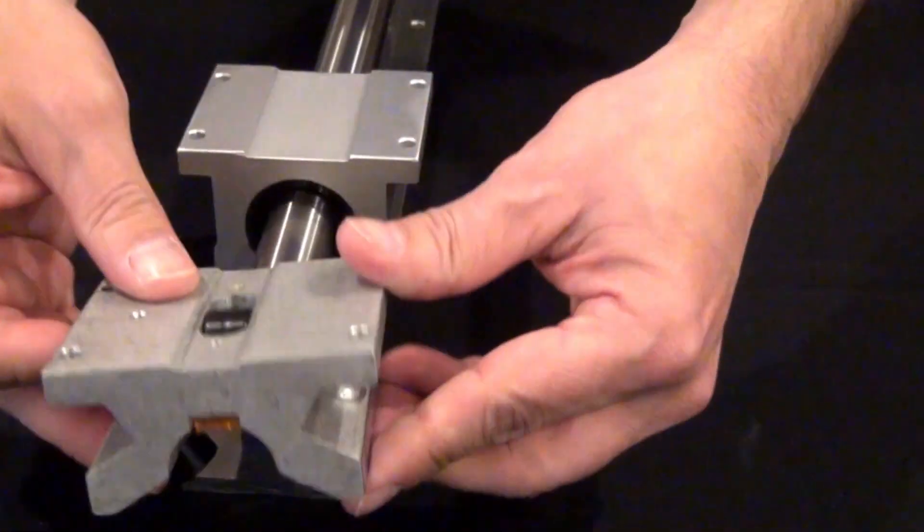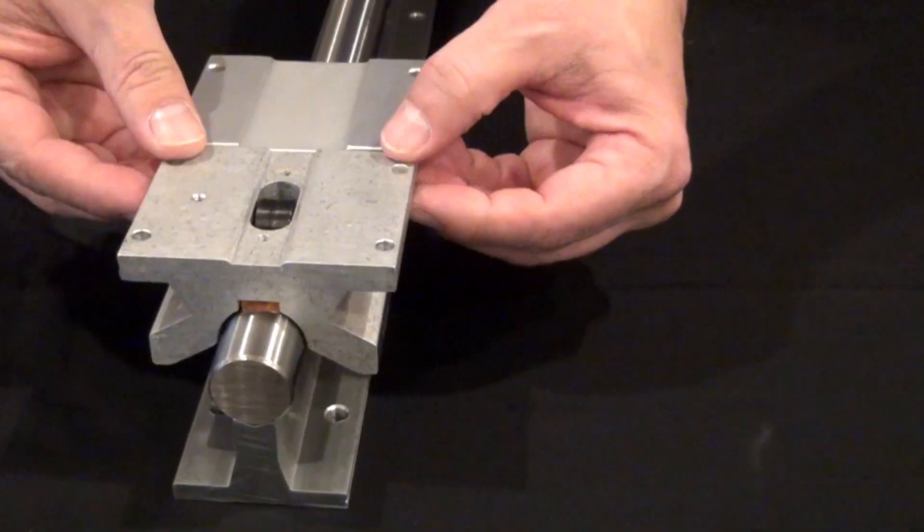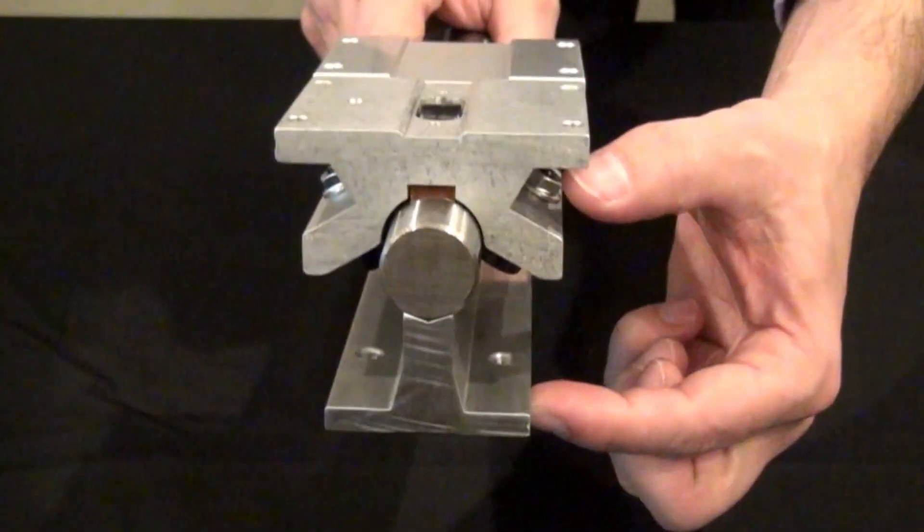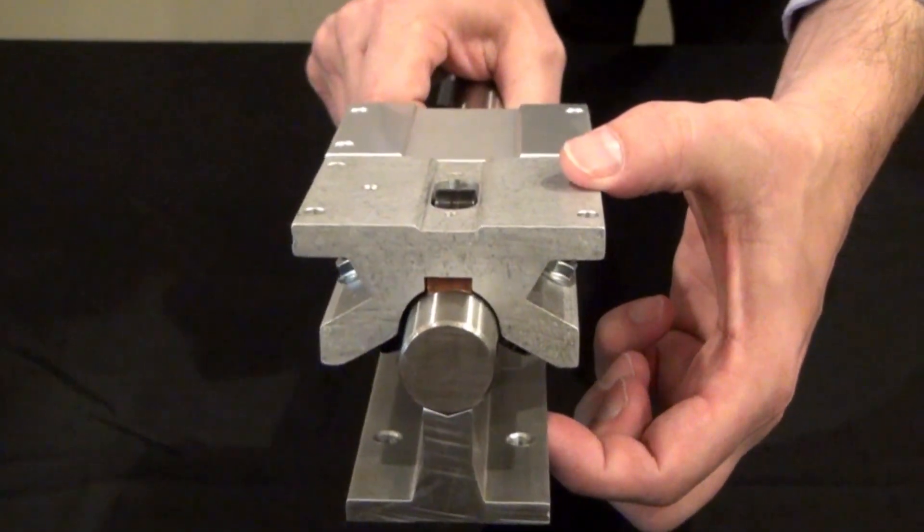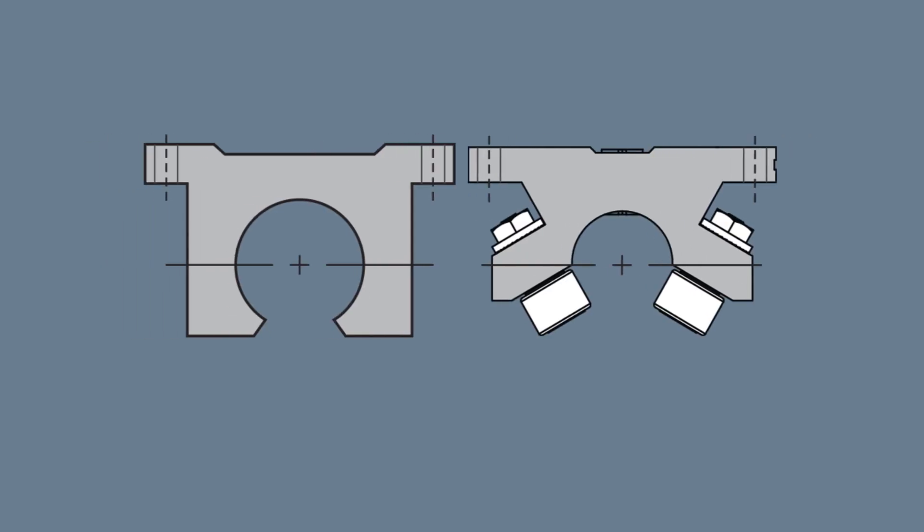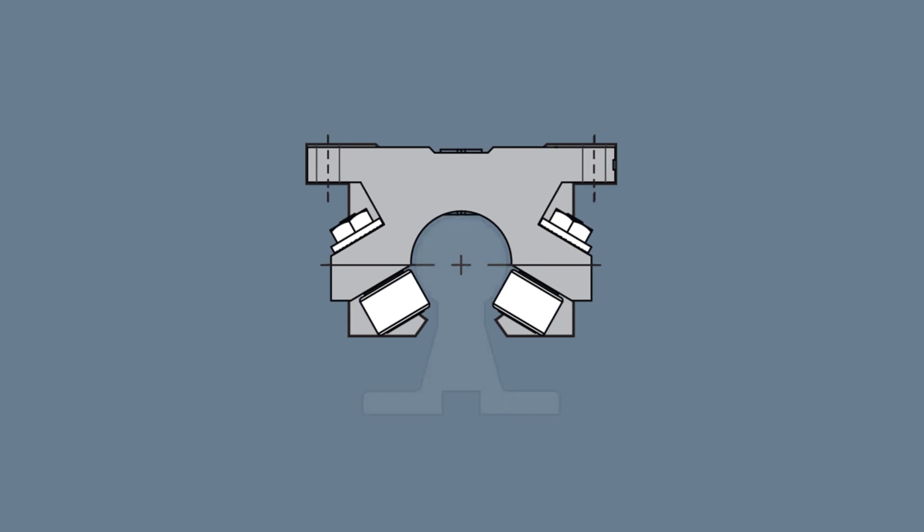Notice how the pillow blocks have the same mounting holes and center line as a traditional recirculating ball-bearing block. This gives you complete size interchangeability with industry standard blocks, allowing you to take advantage of the performance benefits of the roller-bearing pillow blocks without having to redesign the linear motion.